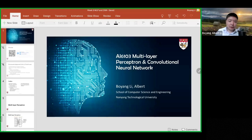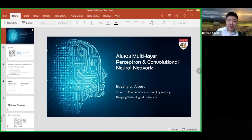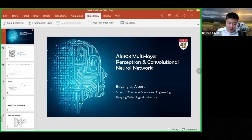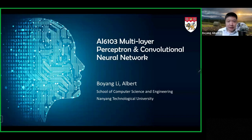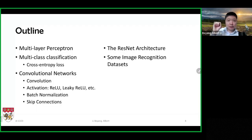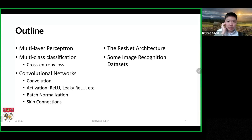Welcome to another session of AI6103, Multilayer Perceptron and Convolutional Neural Networks. Last week, we talked about logistic regression, which is really just linear regression with a single nonlinear activation function. This week, we will talk about how we extend logistic regression to a new type of network known as multilayer perceptrons.